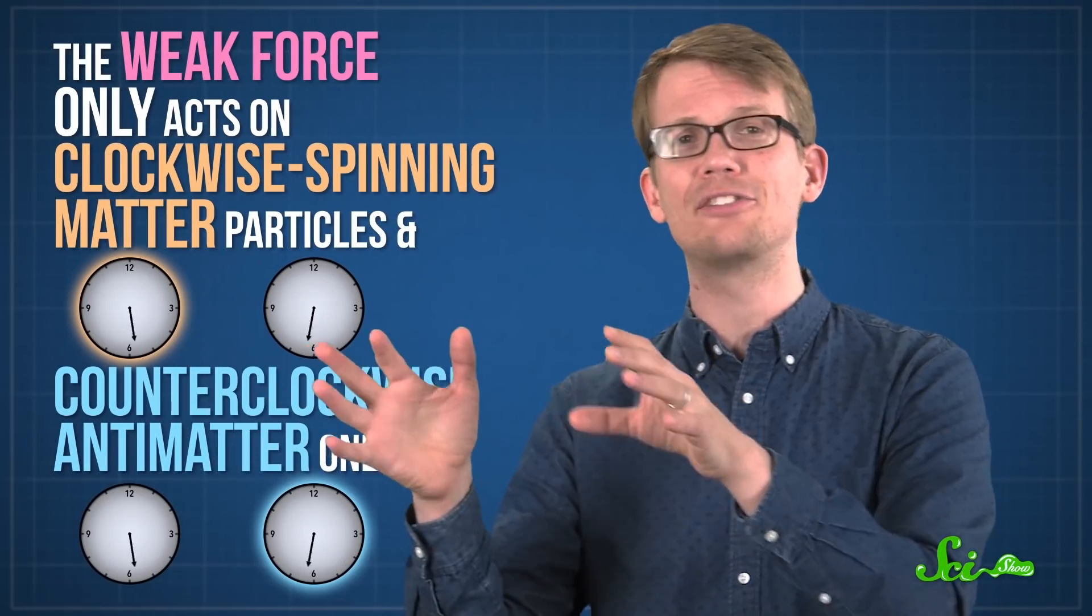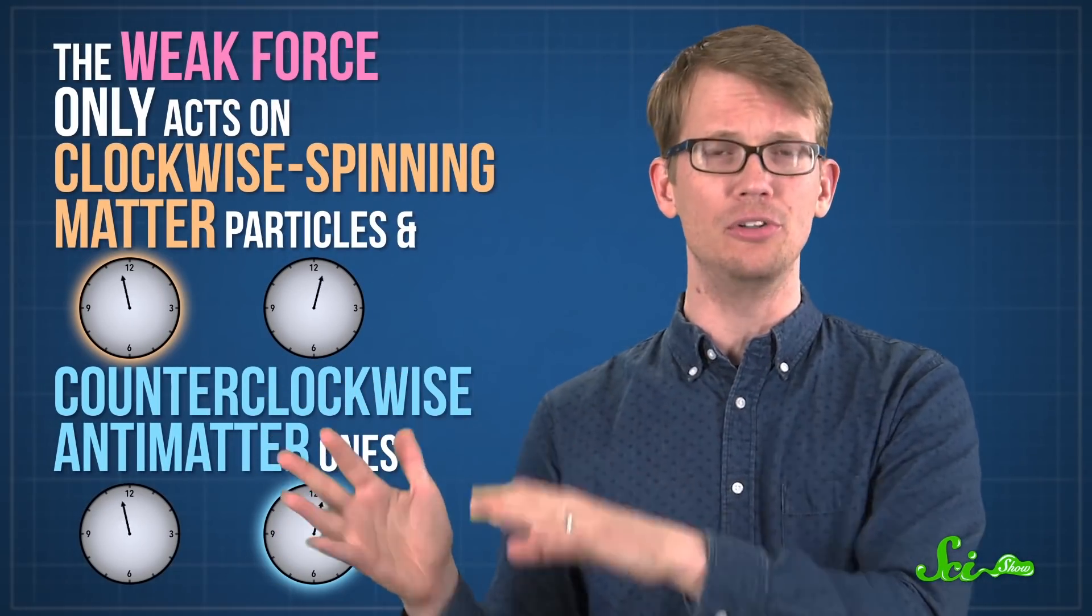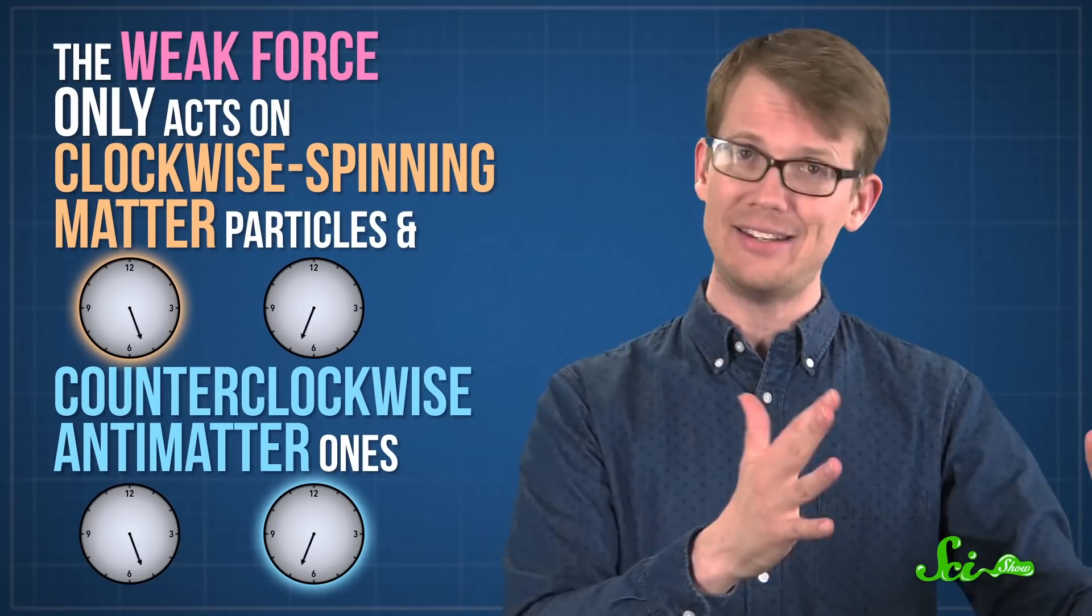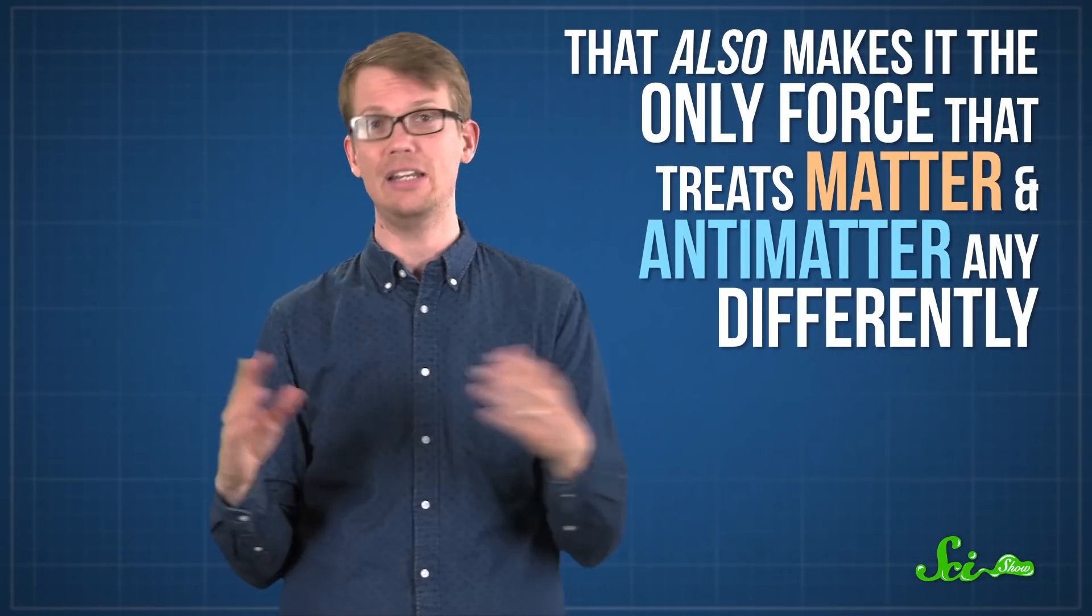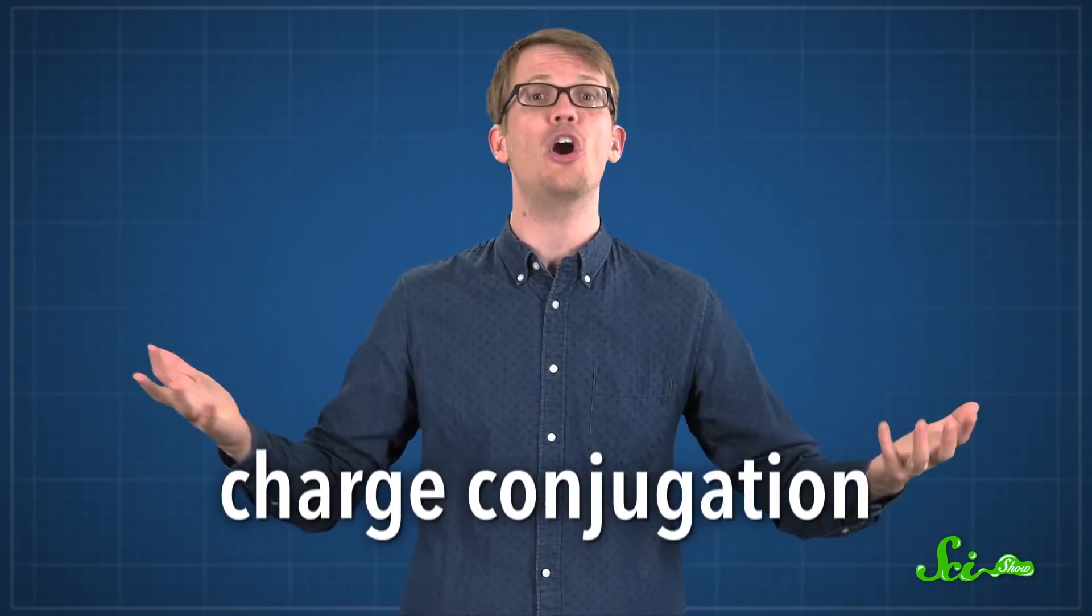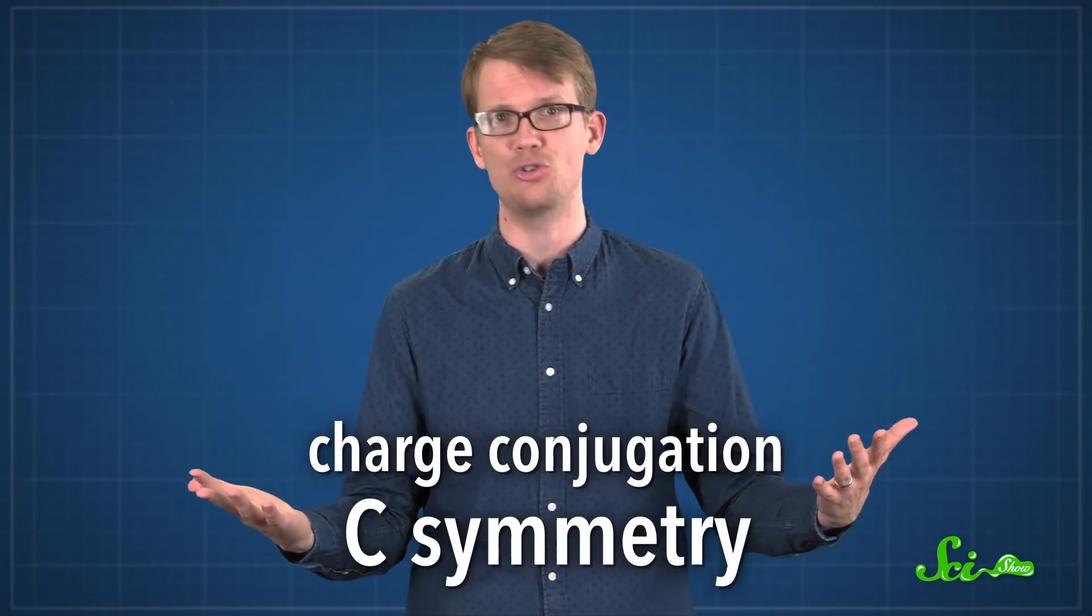Later experiments showed that spin really matters too. The weak force only acts on clockwise-spinning matter particles and counterclockwise-antimatter ones. That also makes it the only force that treats matter and antimatter any differently. So it's the only one that violates another symmetry called charge conjugation, or C-symmetry.